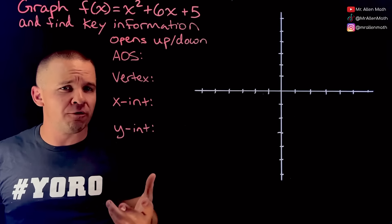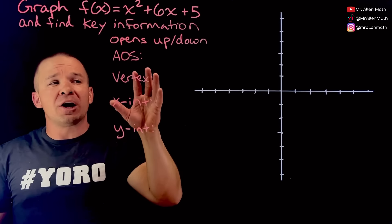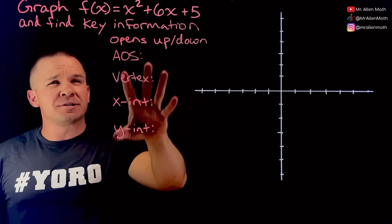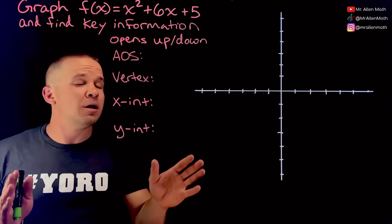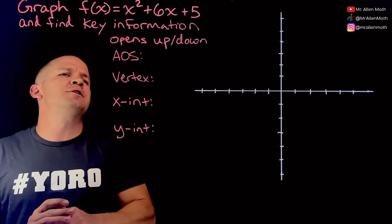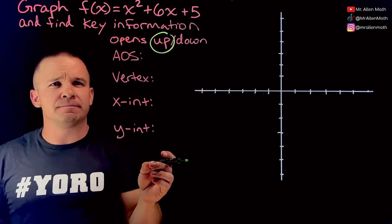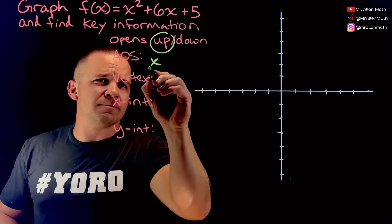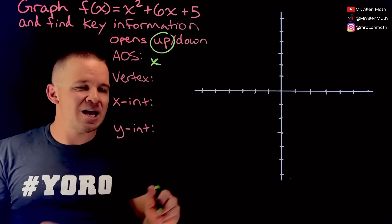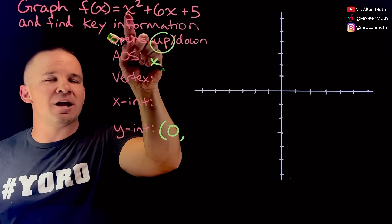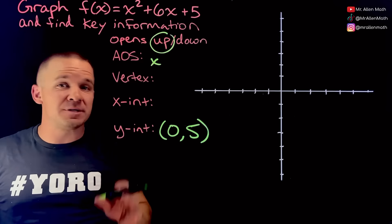We've got one in standard or general form — I'm a standard form kind of guy, but some people refer to it as general form. We want to graph this thing, so we use at least three key points, maybe five, and we're also going to find some key information. Now, on a test they might not ask for all this information, but I'm going to show how to get everything in this form. Is it opening up or down? It's positive for our lead coefficient, so we are opening up like a cup.